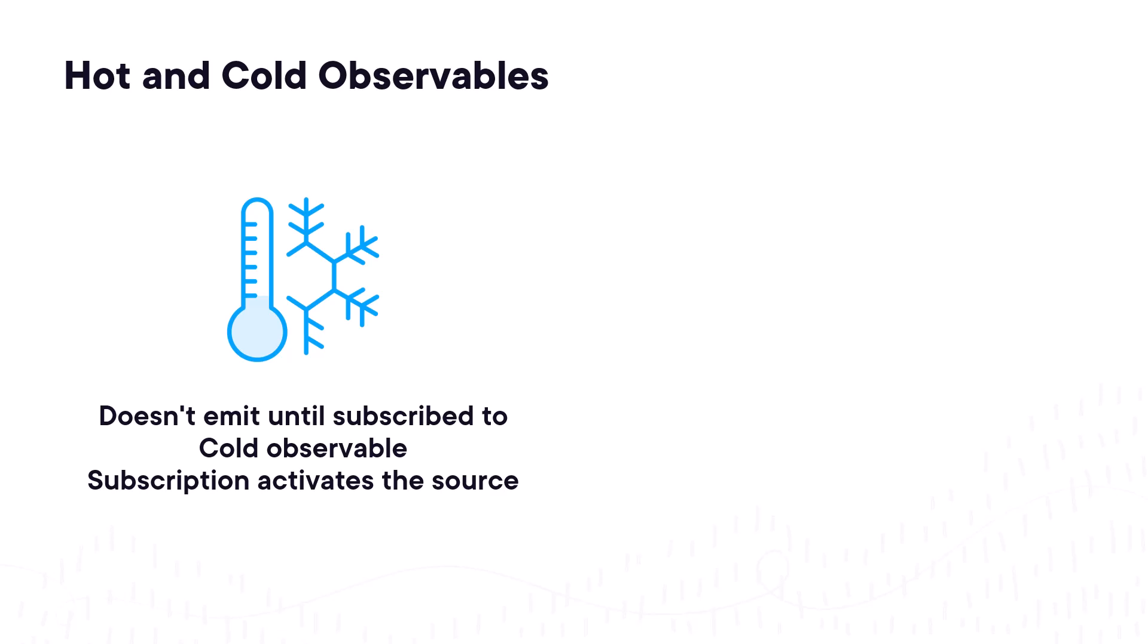The source generates events or provides data, and the observable emits the event or data. Cold observables are normally unicast and emit only to that subscriber. When another observer subscribes, the items are again emitted to that subscriber. Each subscriber gets its own set of emissions.